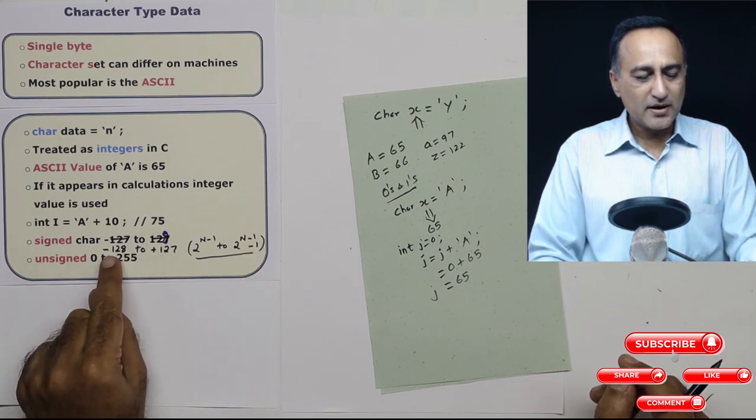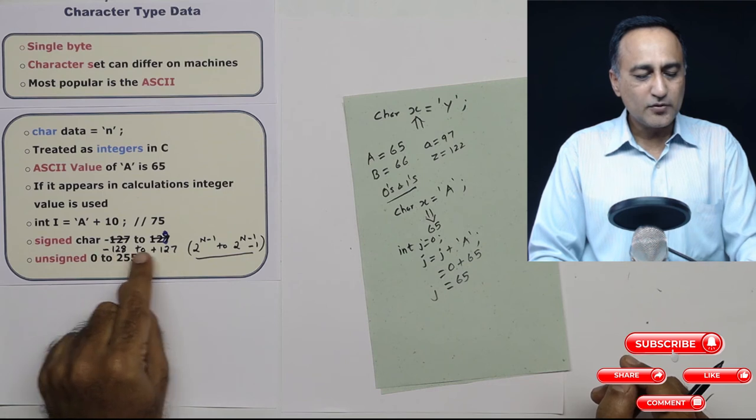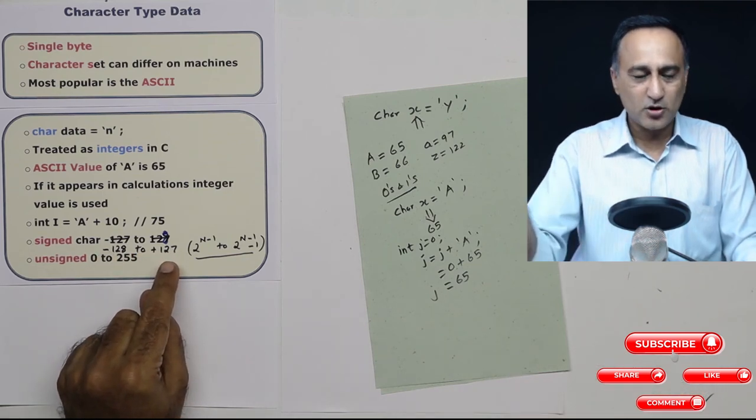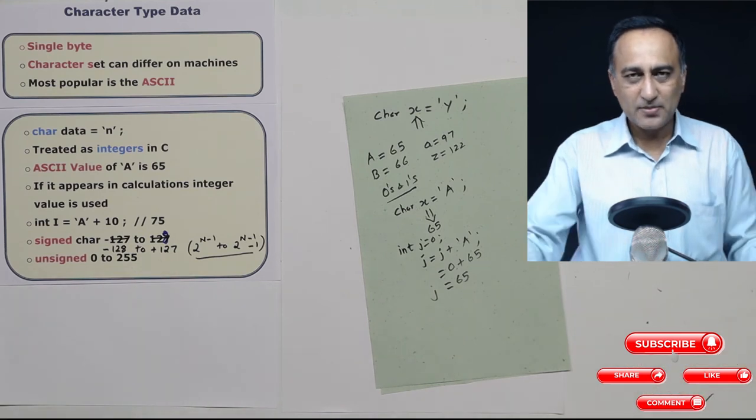So if you totally look at it, you're representing 256 characters in seven bits, which makes sense because you're starting from zero all the way till minus 128 and plus 127.